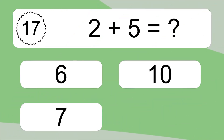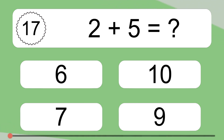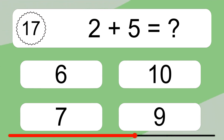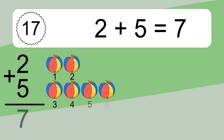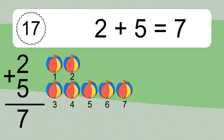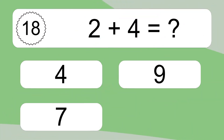2 plus 5 equals what? 2 plus 5 equals 7. Let's count it: 1, 2, 3, 4, 5, 6, 7. 2 plus 4 equals what?